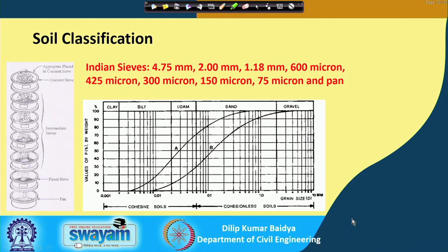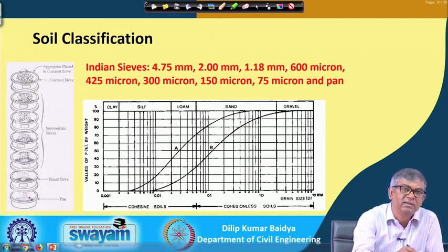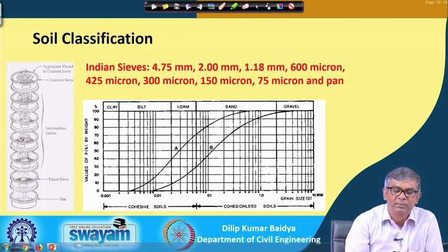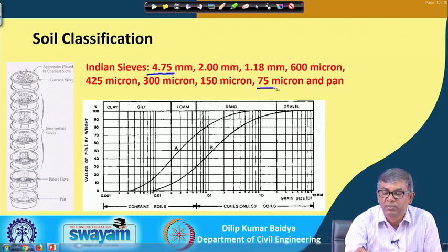First is the physical examination: open the bag, see the soil, and then take the decision about what to do next. If the soil is free-flowing and granular, then obviously you can go for sieve analysis. In sieve analysis, there are a number of sieves kept one after another, with the bottom-most being a pan, and these sieves have different sizes of openings.